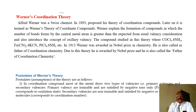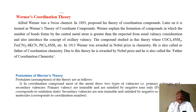Due to this theory, he is awarded the Nobel Prize and is also called the father of coordination chemistry. The postulates — that is, assumptions — of this theory are: in coordination compounds, most metals show two types of valency, that is primary valency and secondary valency.